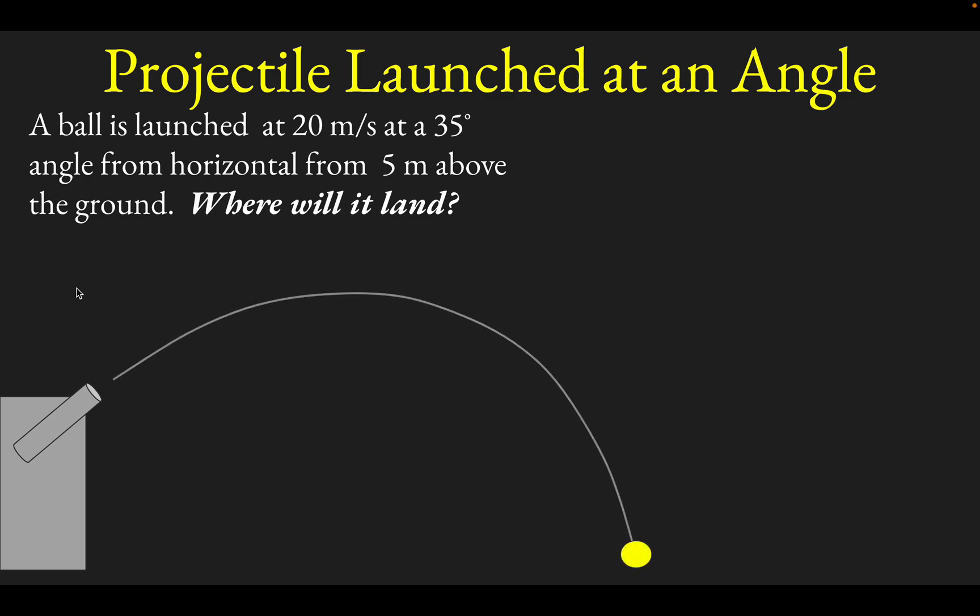It's usually helpful to start with some kind of picture like we've got going here. The ball is launched at 20 meters per second, so here is its initial velocity vector tilted up at 35 degrees above the horizontal. The next thing that's a good idea is to choose positive directions. In this particular problem, I'm going to choose the positive directions being to the right and up.